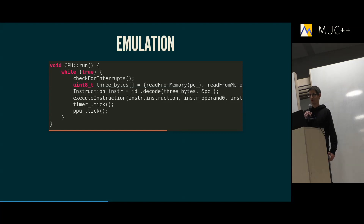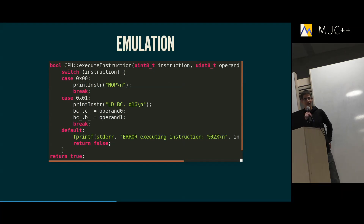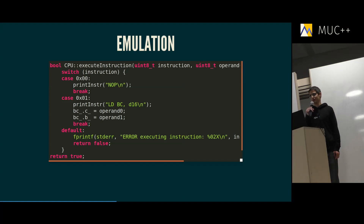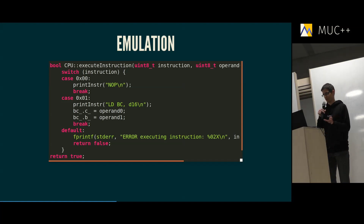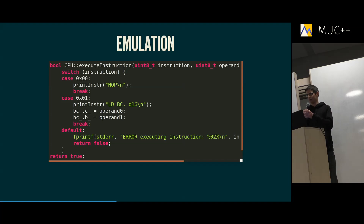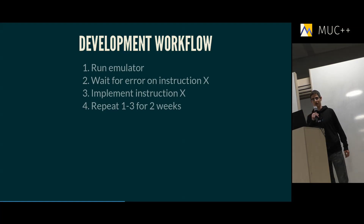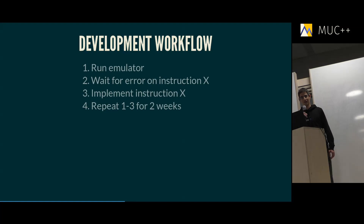In theory it should work like that, but in practice you have to live with the fact that the Gameboy CPU has some bugs, and you have to re-implement those bugs — which makes things harder. To execute an instruction I wrote a switch statement: if the opcode is zero, that's a NOP — it does nothing. If it's instruction number one, you load the operand into registers and continue. The development workflow looks like this: run your emulator on a game, wait until you get an error message about an unimplemented instruction, implement it, and repeat — for about two weeks.